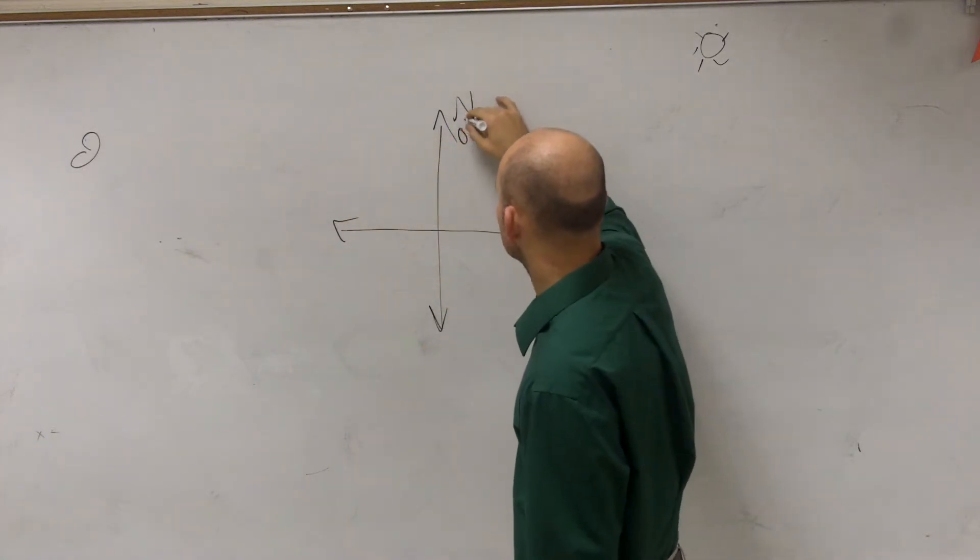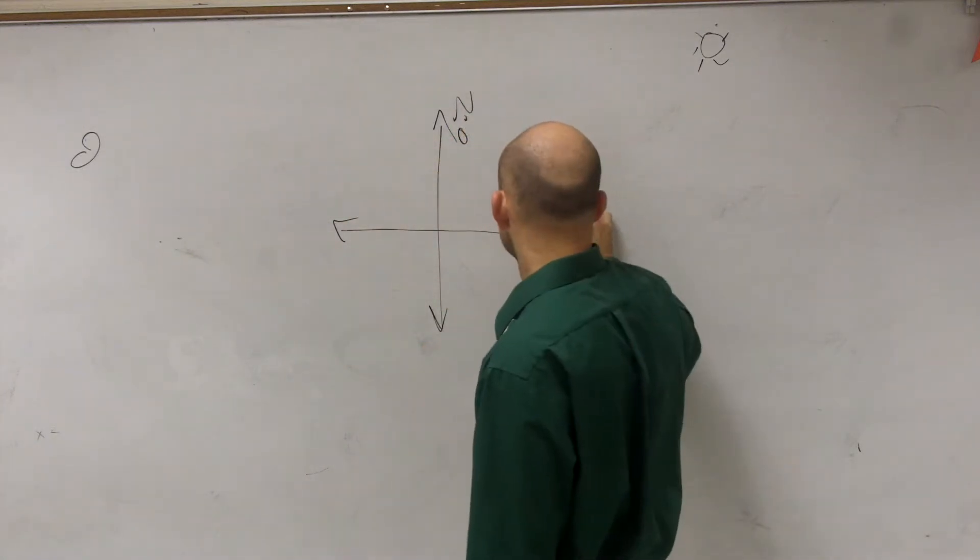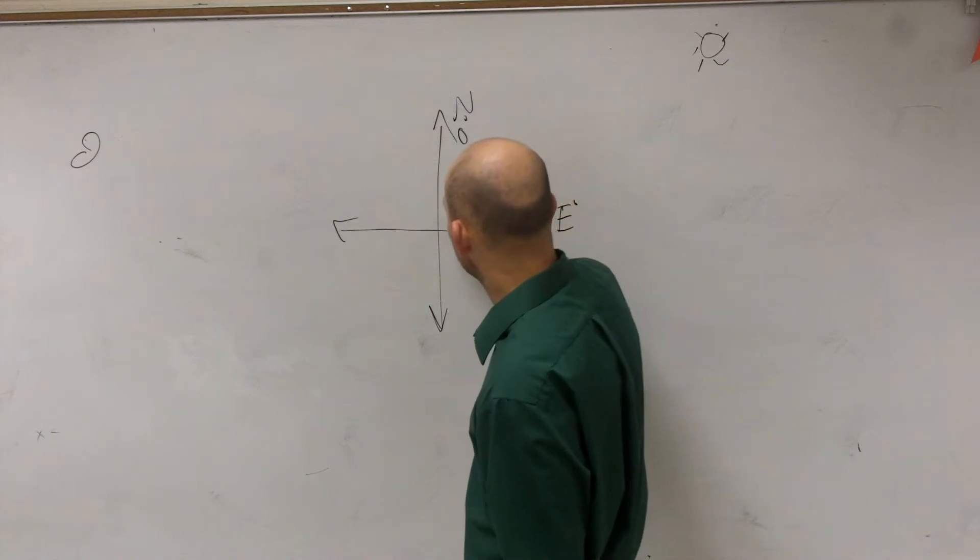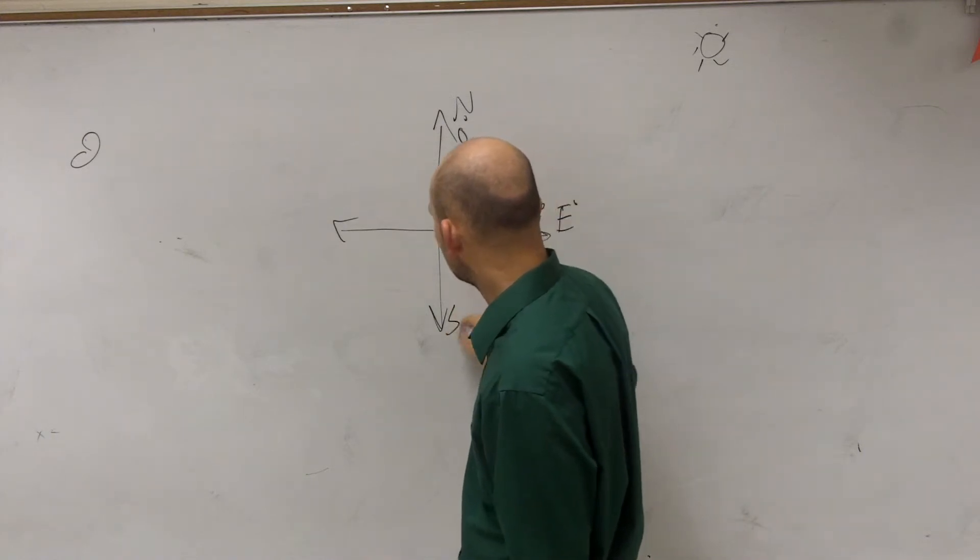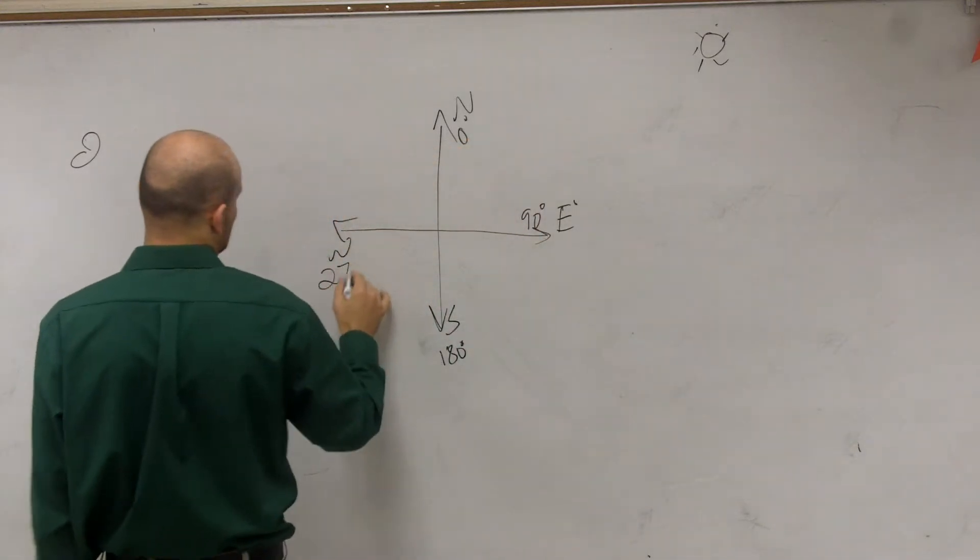We have due north is going to be 0 degrees, due east is going to be 90 degrees, due south is 180, and due west is 270 degrees.